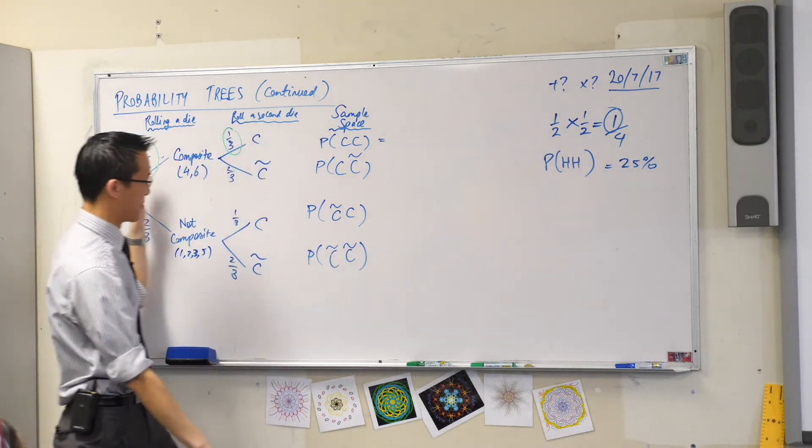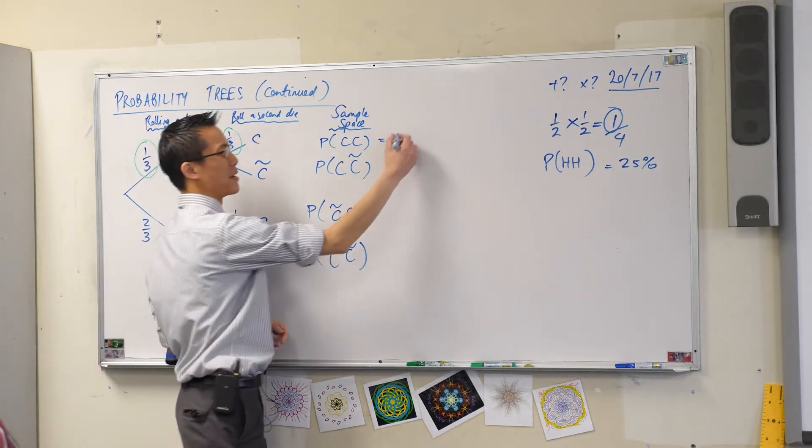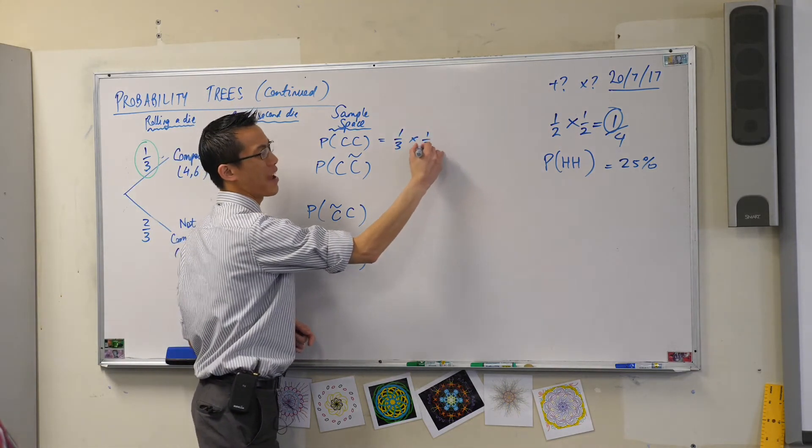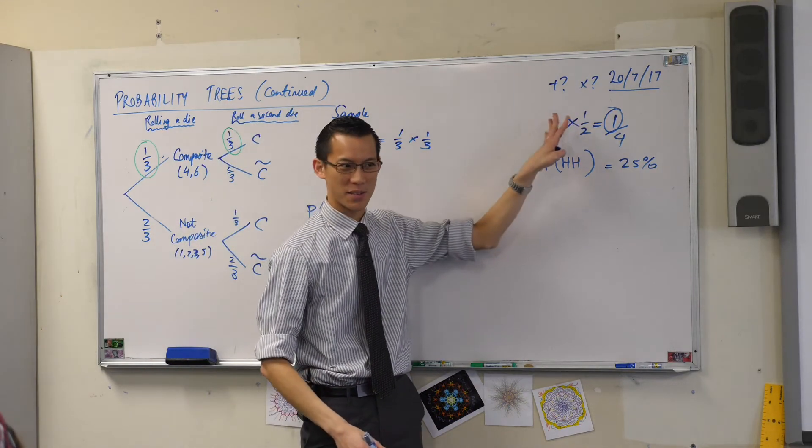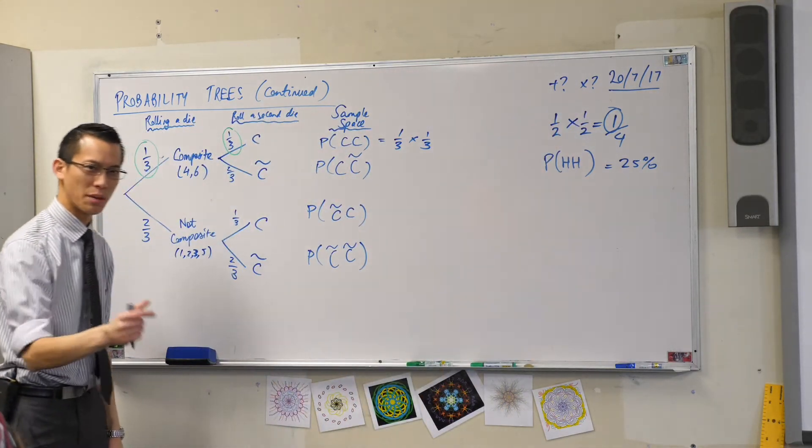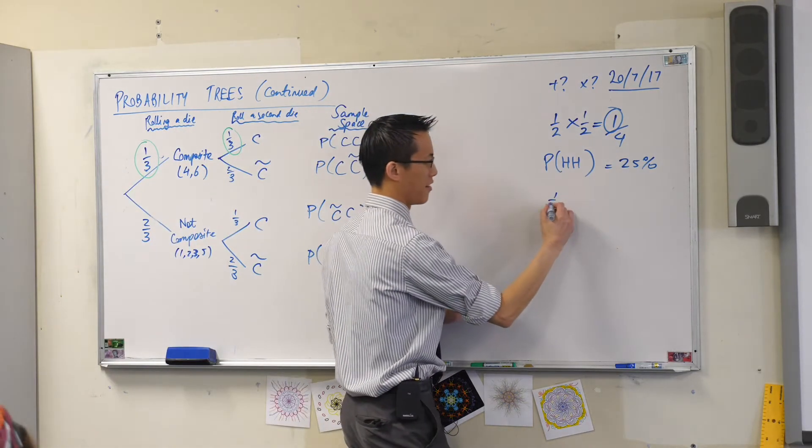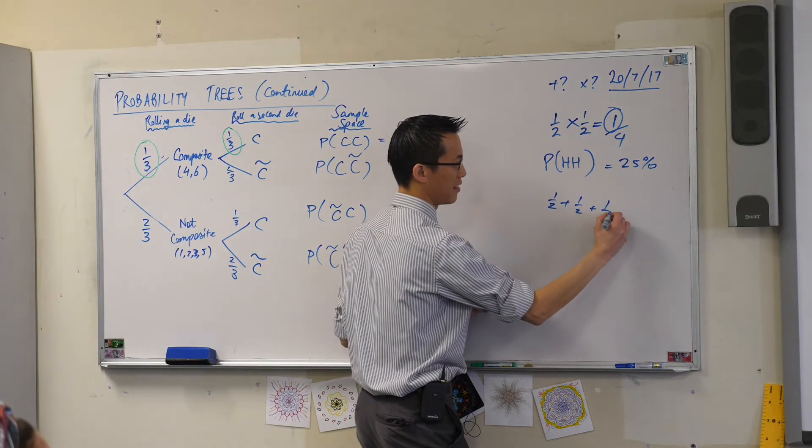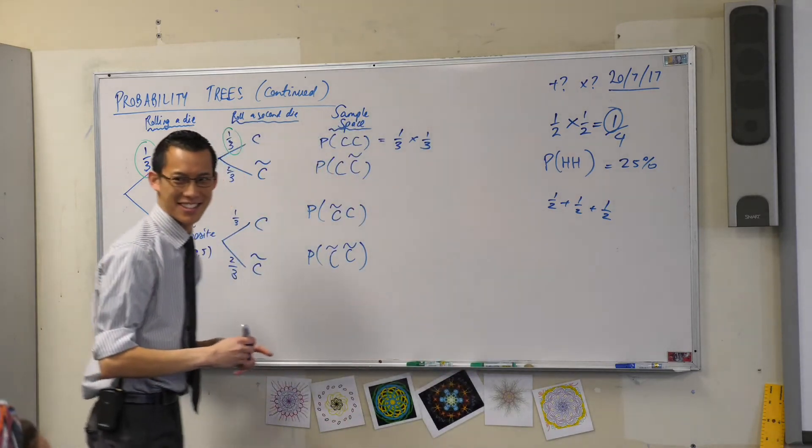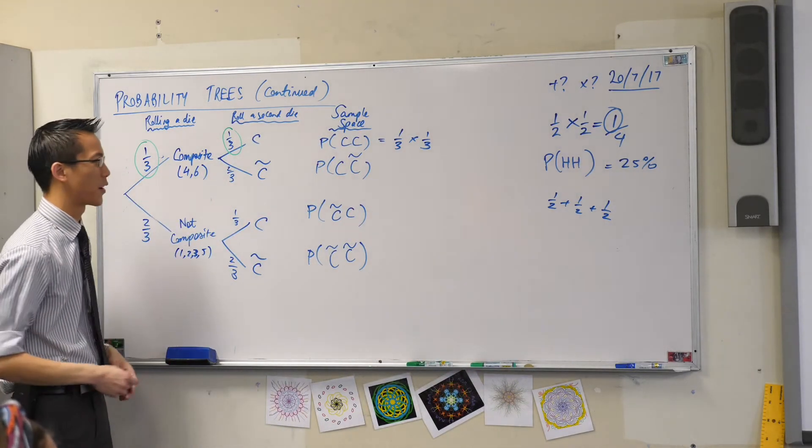This is the reason why it's multiplying across and adding down. Because if you did it any other way, you would get crazy things, right? Like, the more times you do something, the more likely it becomes. What about three heads in a row? If you were adding, it's like, oh yeah, this is 150% likely. So that's bogus.